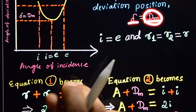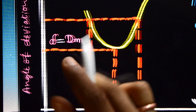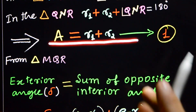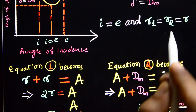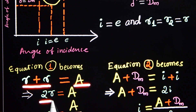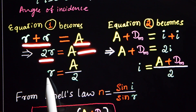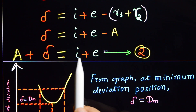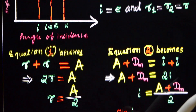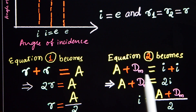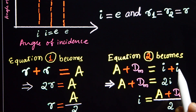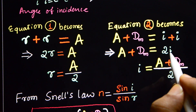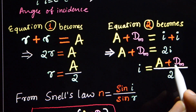Applying these minimum deviation conditions to equation 1: A equals R1 plus R2 equals R plus R equals 2R, so R equals A divided by 2. From equation 2, A plus dm equals I plus E equals 2I, so I equals (A plus dm) divided by 2. Now applying Snell's law, n equals sine(i) divided by sine(r). Substituting i equals (A plus dm)/2 and r equals A/2, we get n equals sine of (A plus dm)/2 divided by sine of A/2.